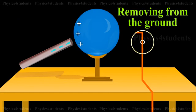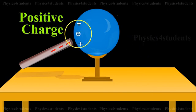When the sphere is removed from the ground, the positive charge continues to be held at the near end.